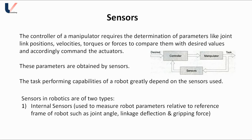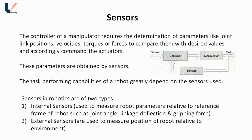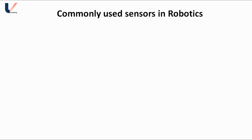The second type is external sensors. External sensors are used to measure the position of a robot relative to the environment. This parameter is used for the orientation of various parts of the manipulator. Commonly used sensors in robotics include tactile sensors, resistive sensors, infrared sensors, and ultrasonic sensors.